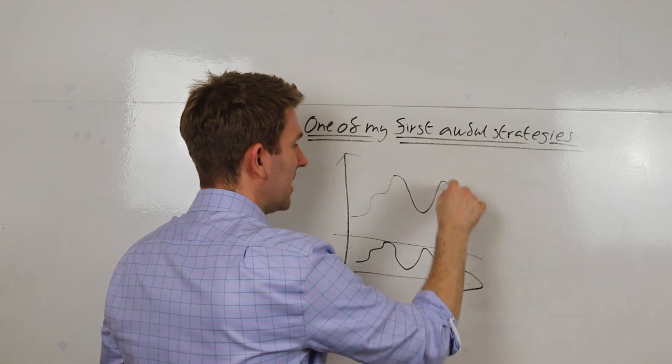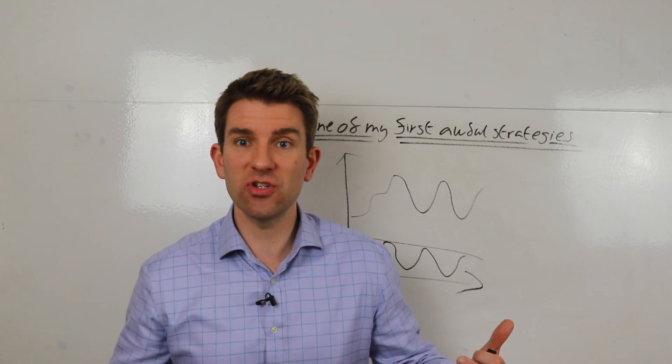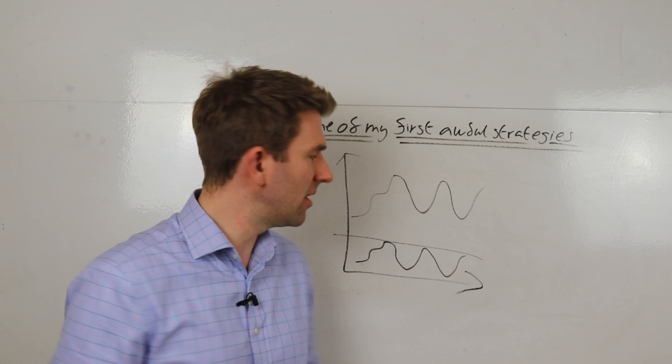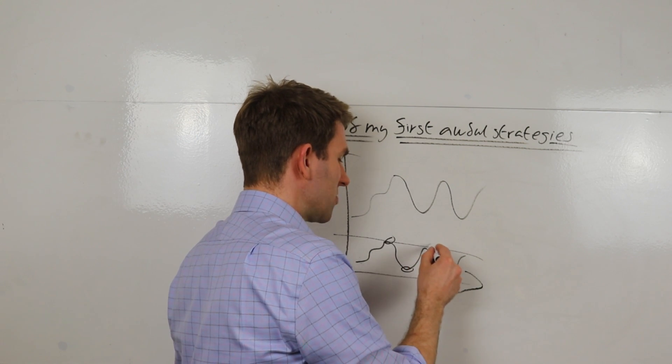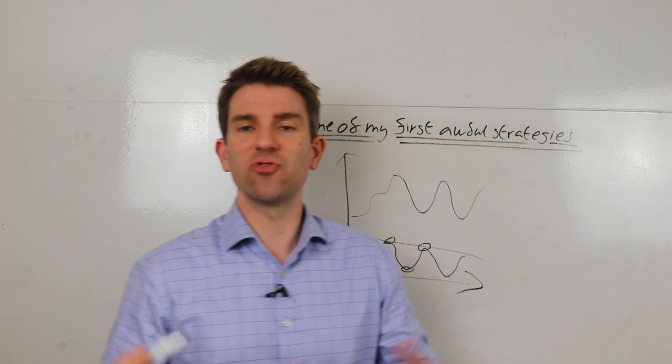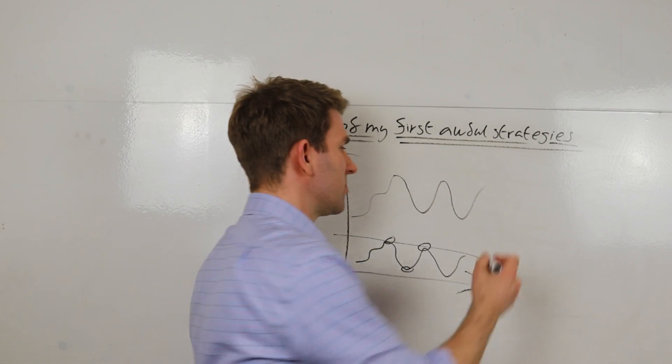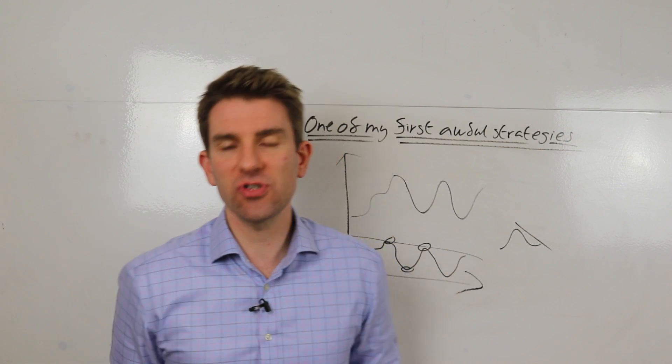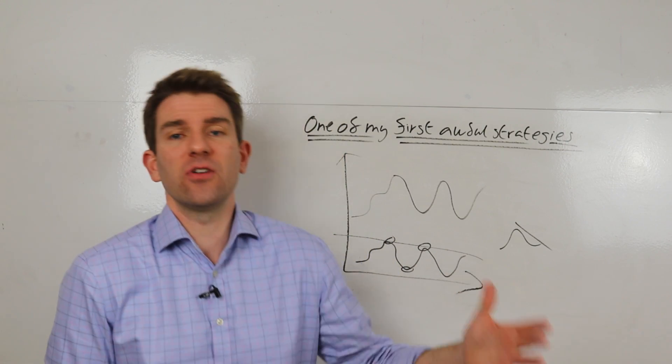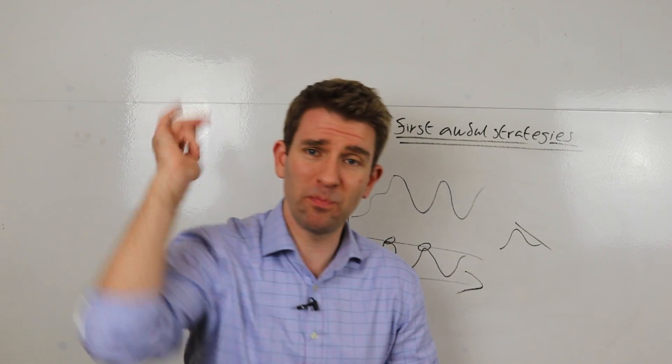I saw this and I thought wow, this looks great. I've got a strategy at last. It looks great on paper, you just go short when it's overbought, you go long when it's oversold, et cetera. There were a few nuances to that, the divergence play and the textbook stuff that you find out when you first start trading.